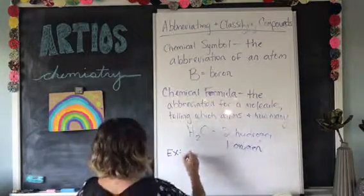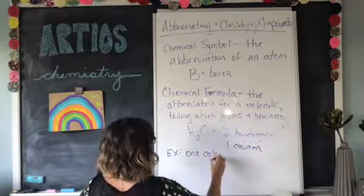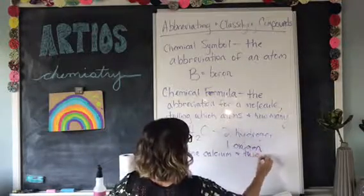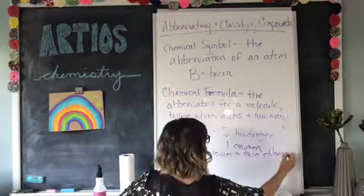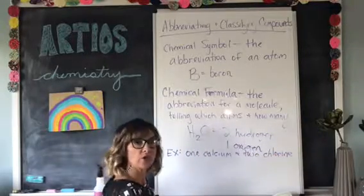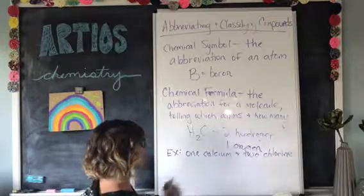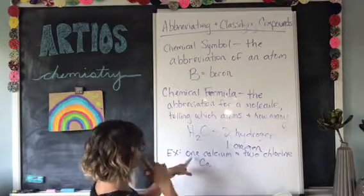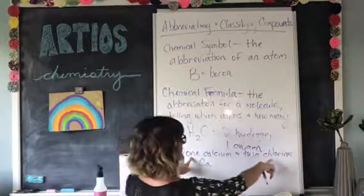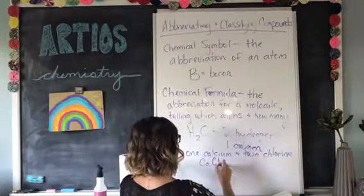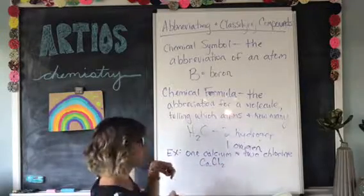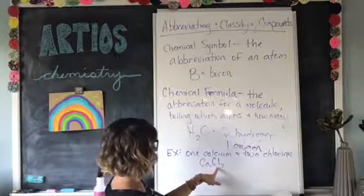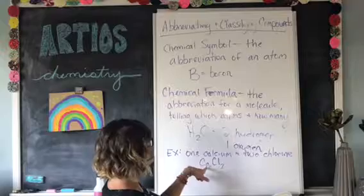For example, what if we have one calcium and two chlorine atoms joined together to make a molecule? What would the chemical formula be? The chemical symbol for calcium is Ca — there's only one, so no subscript. The chemical symbol for chlorine is Cl, and there are two of them, so we put a subscript 2 after Cl. So CaCl2 is the chemical formula for calcium chloride.